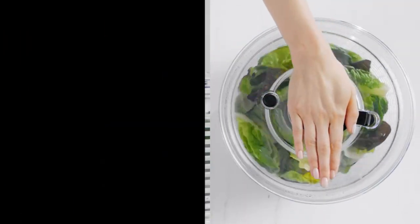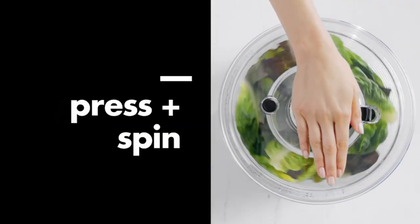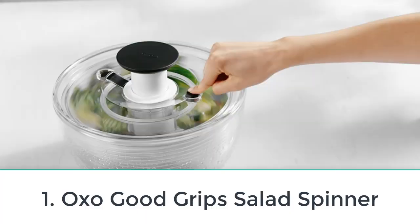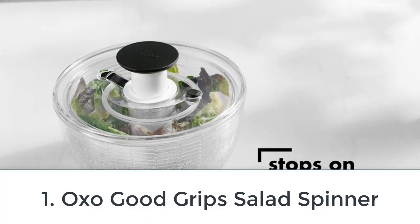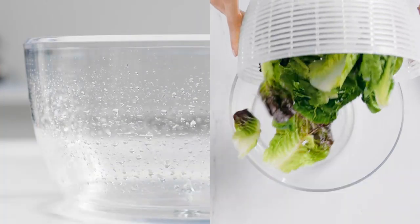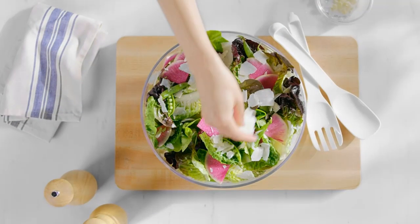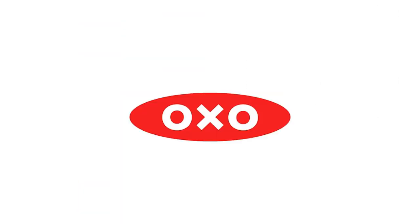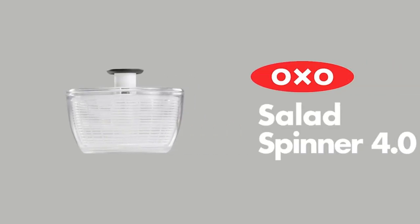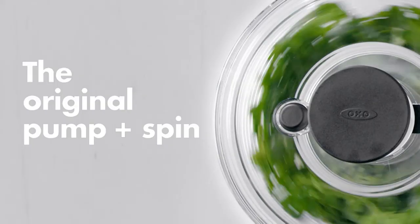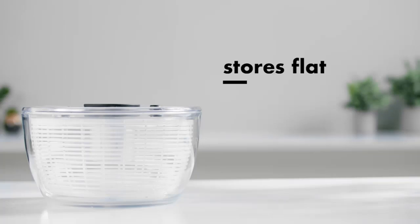Number one: OXO Good Grip Salad Spinner. OXO is a widely recognized and trusted brand for durable, intuitive, and efficient kitchen tools. This salad spinner is no exception. With this model, you can easily prep, wash, and dry a large amount of lettuce, strawberries, bulky root vegetables, canned beans, and much more.